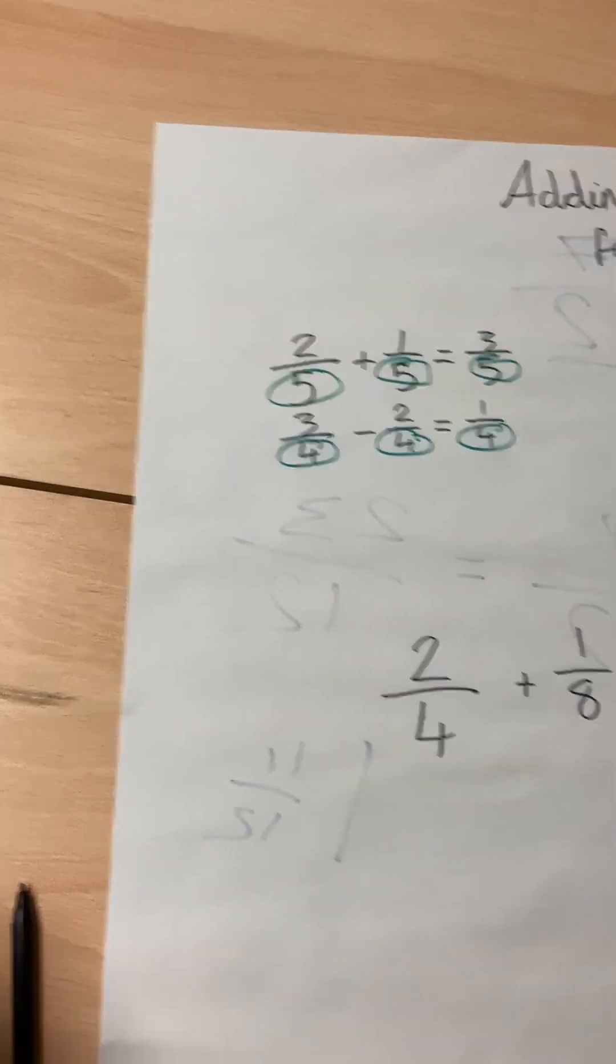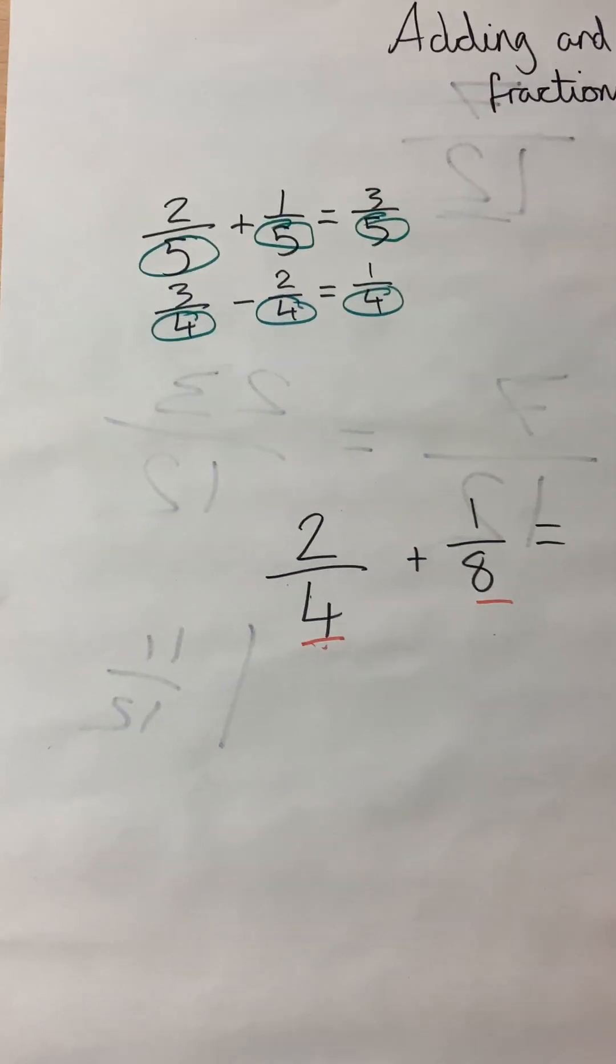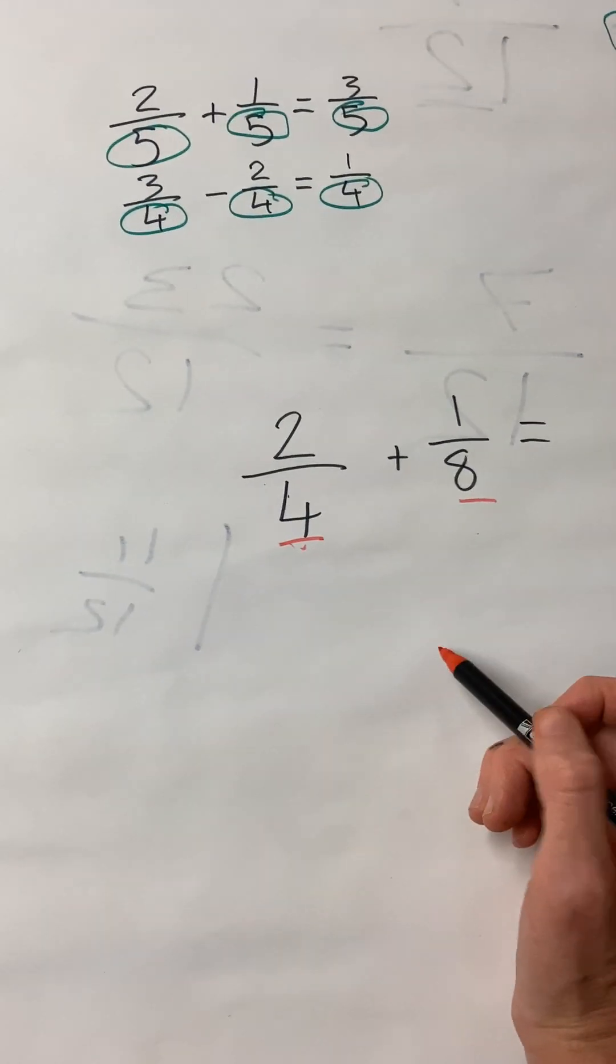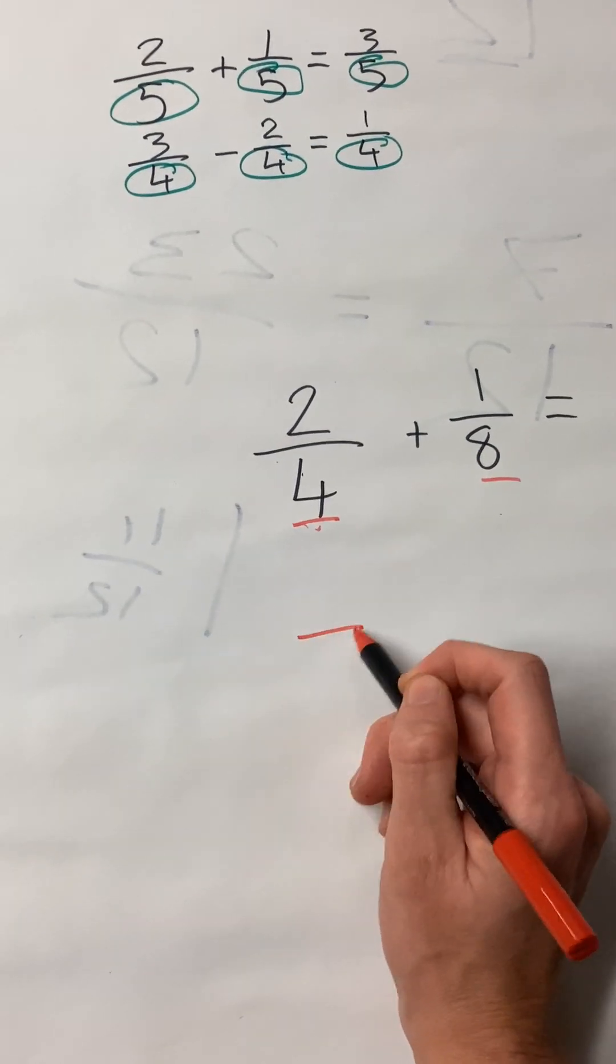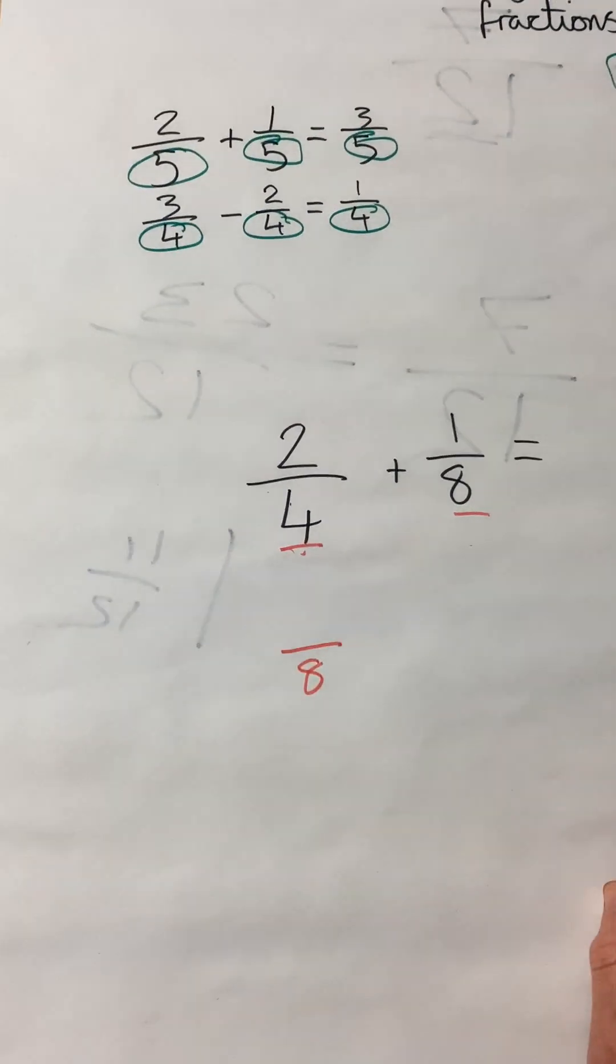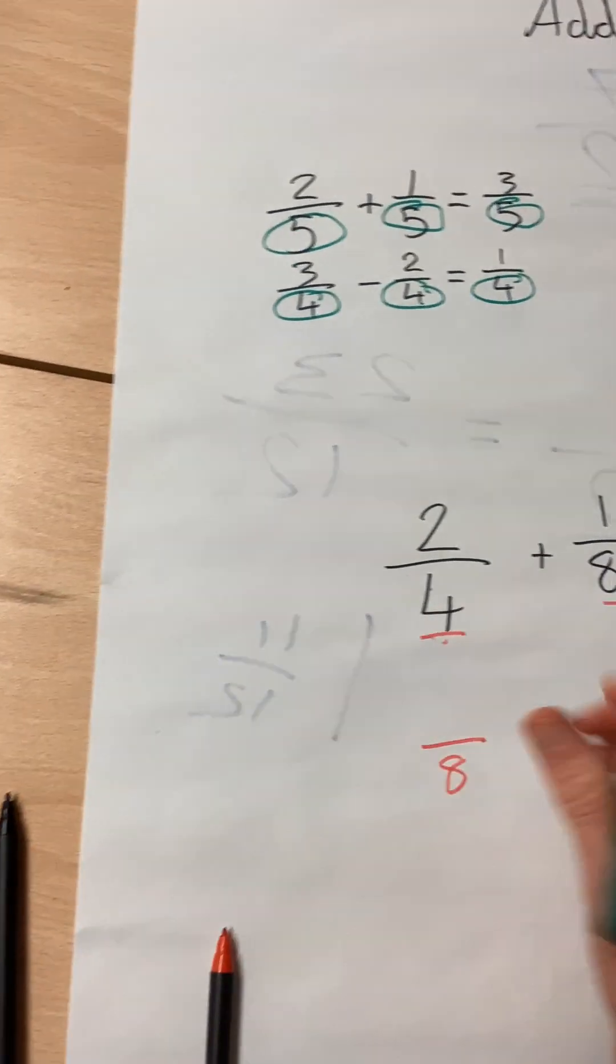So we want to make the denominators the same. So we're going to make them both out of eight. So two-quarters, we actually want it to be out of eight.